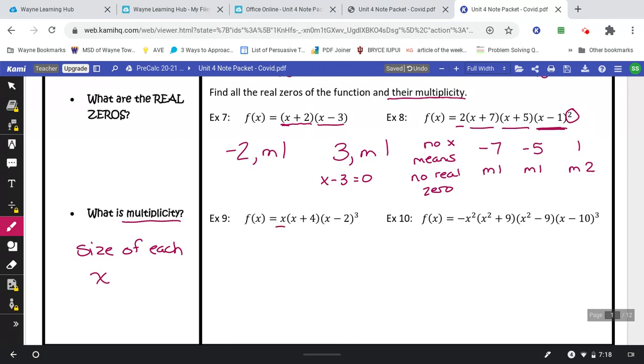Example number 9. Out front here, I have an x. That's always going to give me an answer of 0. Remember, if you plugged it back in, you want to make sure that that gets you a 0. And the only way that's going to get you a 0 is if the answer is actually 0. So I have 0, multiplicity of 1. Negative 4, multiplicity of 1. Positive 2, multiplicity of 3.